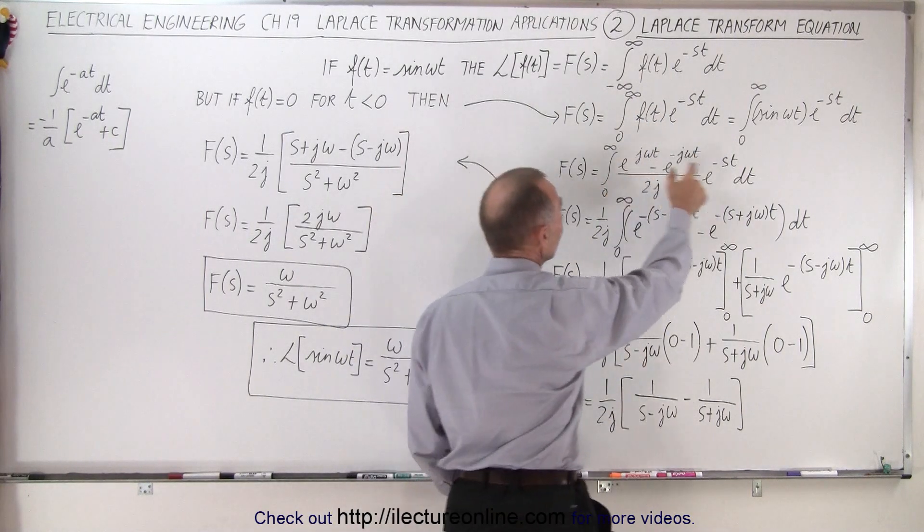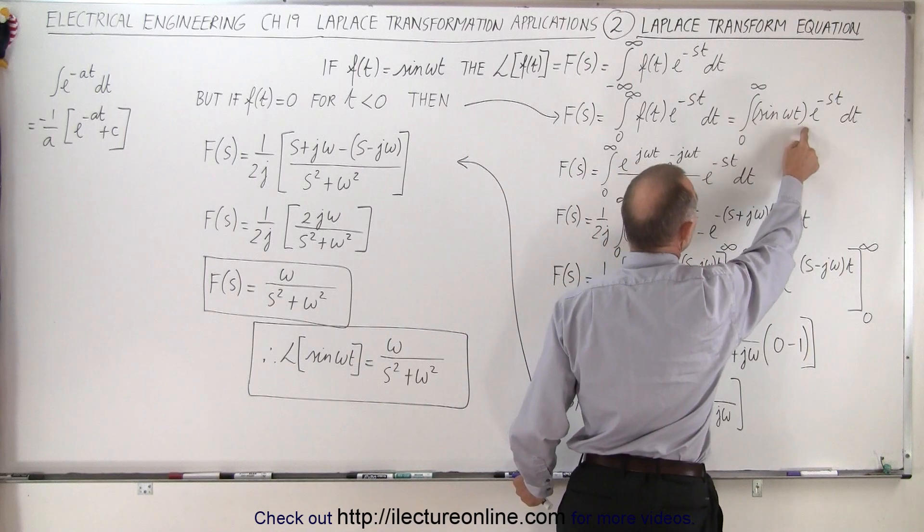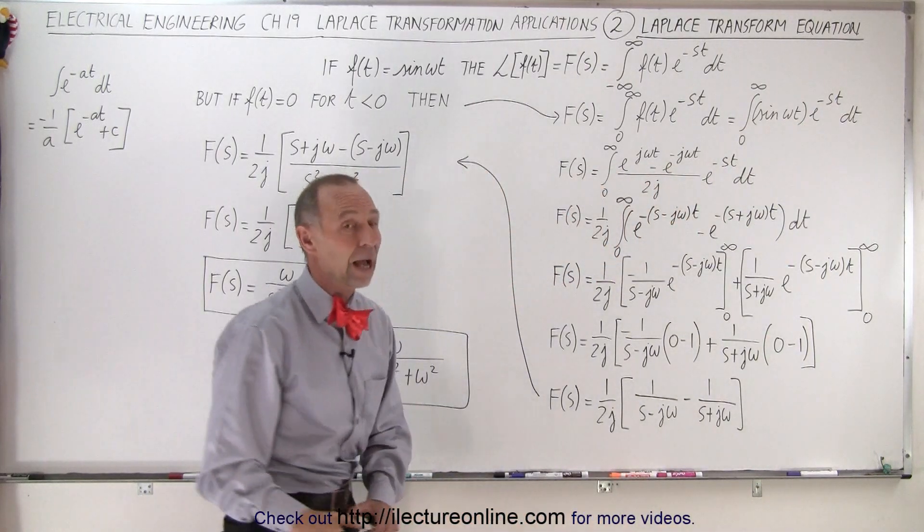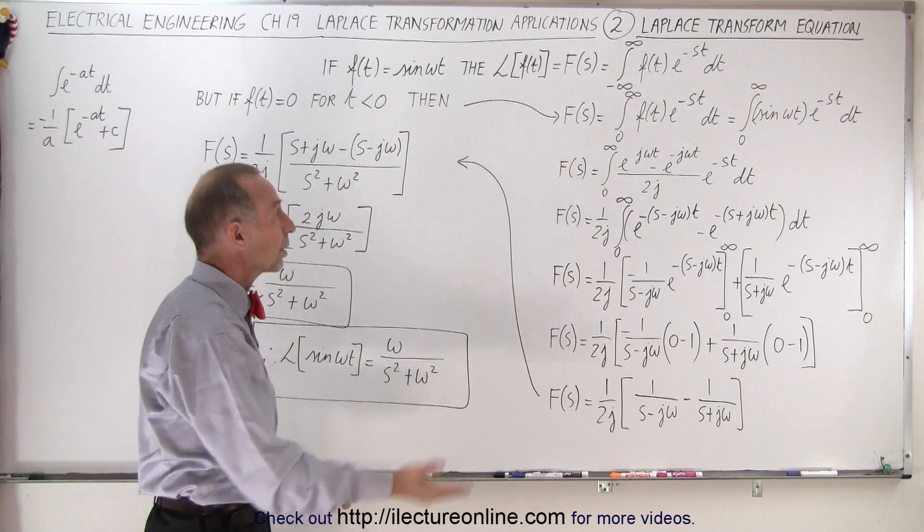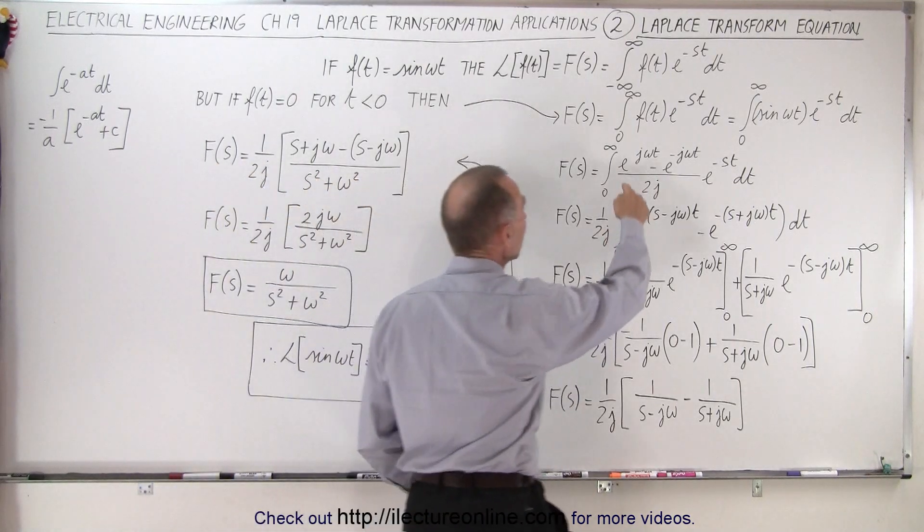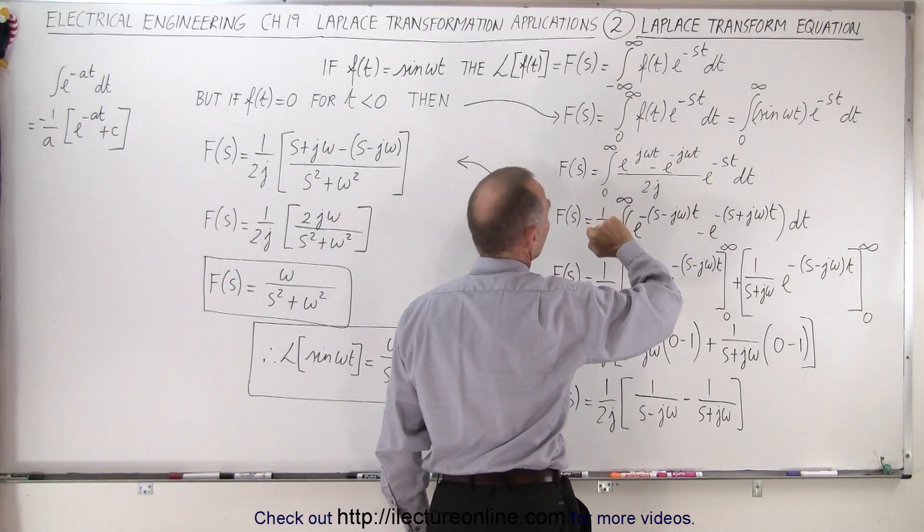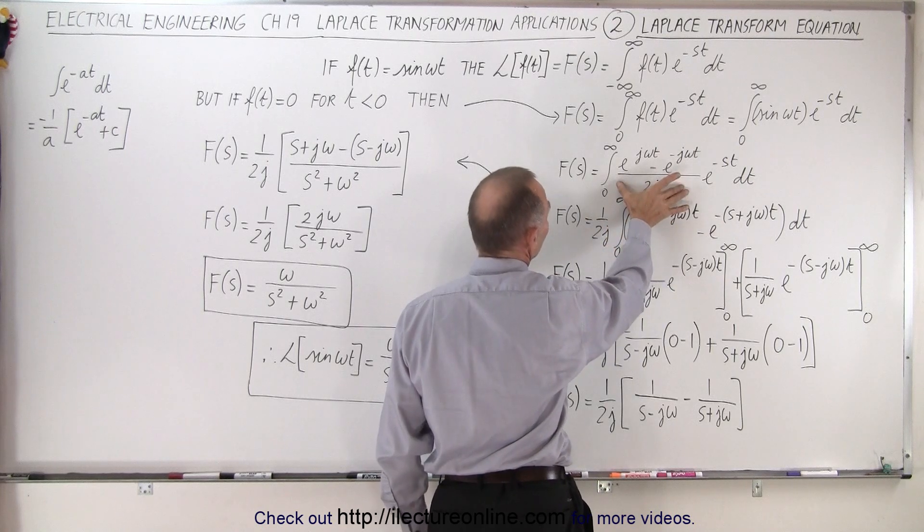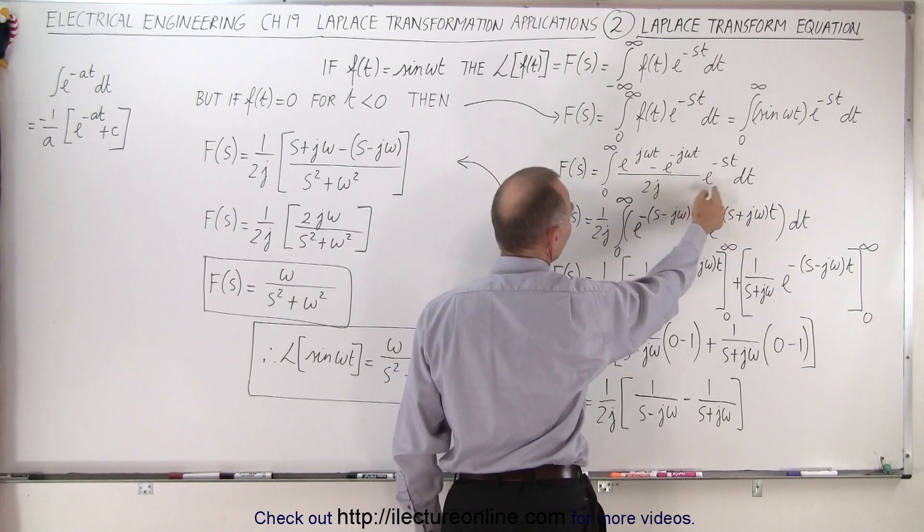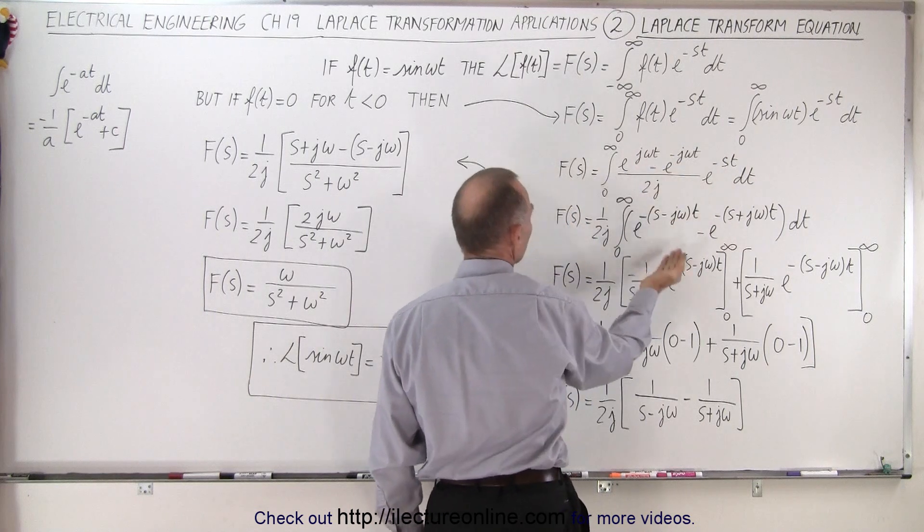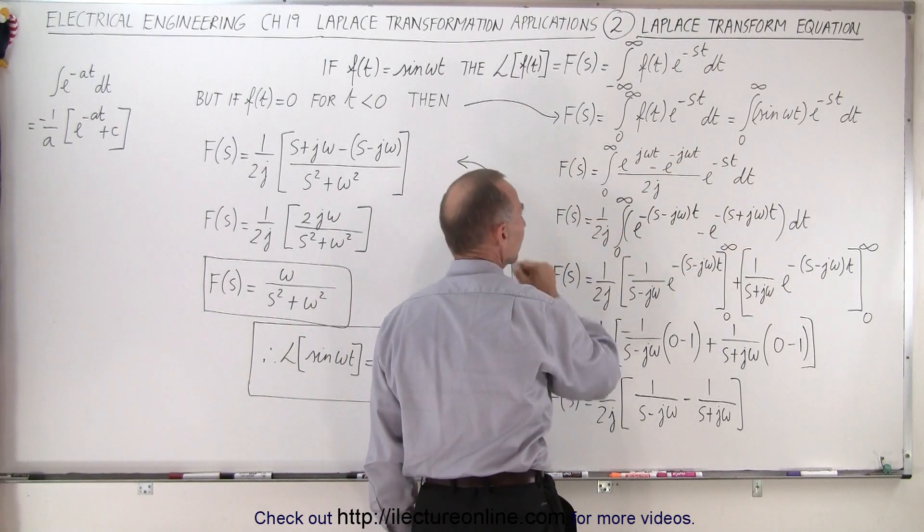And of course our function is in this case the sine of omega t e to the minus st dt. Now how do we integrate that? Well we want to convert the sine of omega t into this format right here. So then we have sine of omega t times e to the minus st.